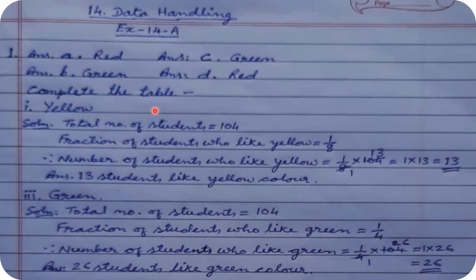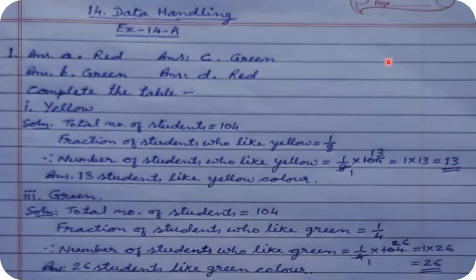Now complete the table to show the number of students who like the given colors. The first one is yellow. To find how many students like yellow out of 104, we need to see what fraction of the circle is covered by the yellow color. Total number of students is 104.